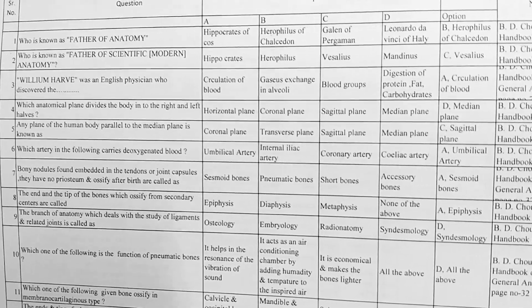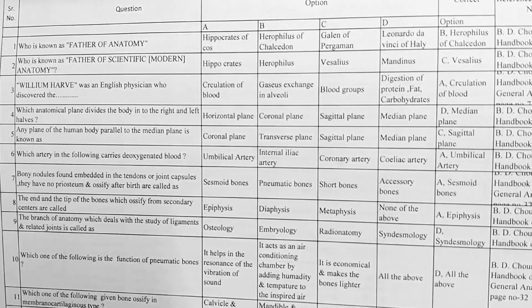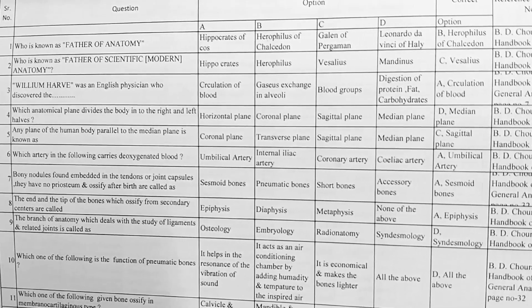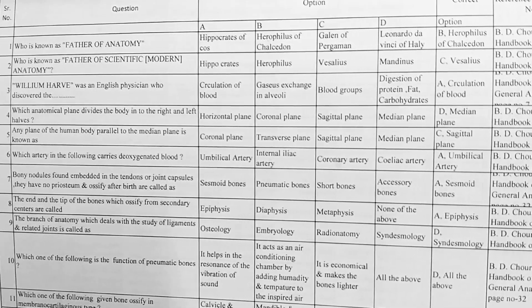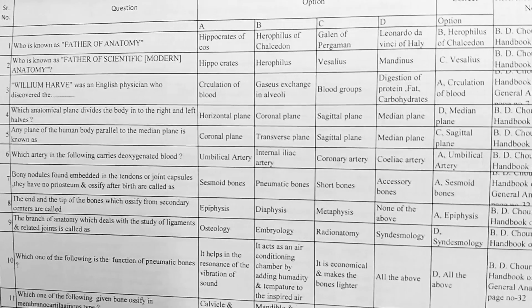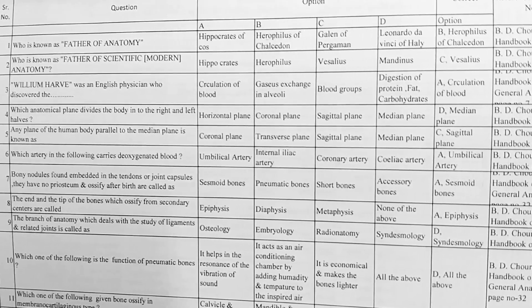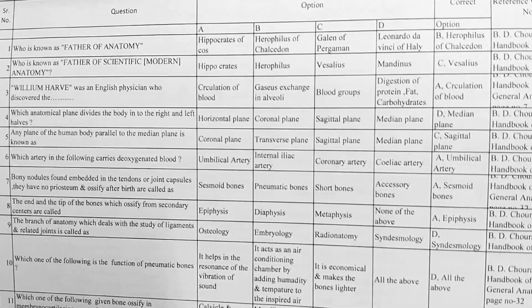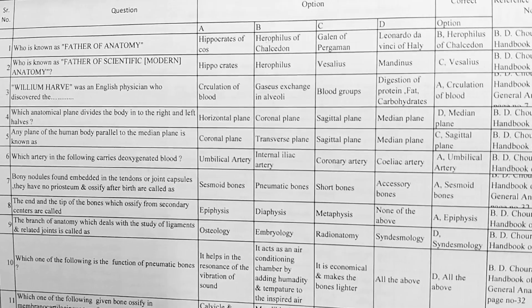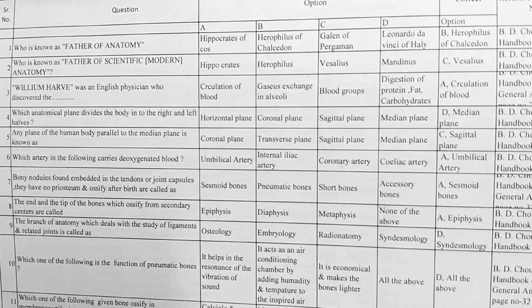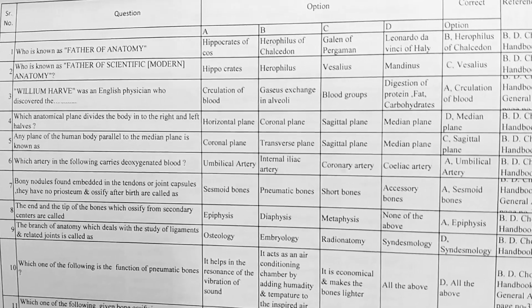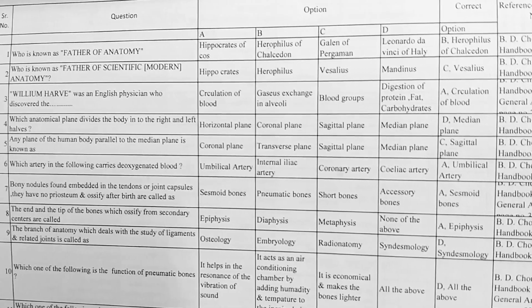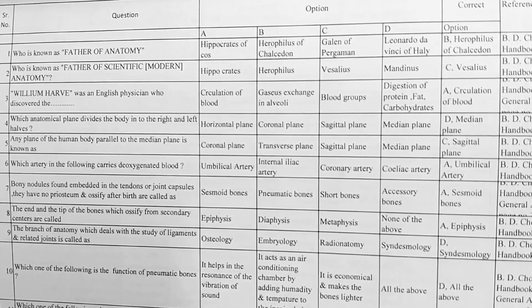Next, which artery carries deoxygenated blood? Options: A. umbilical artery, B. internal iliac artery, C. coronary artery, D. celiac artery. Correct option is A, umbilical artery.